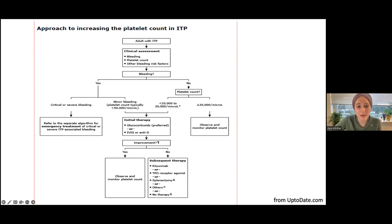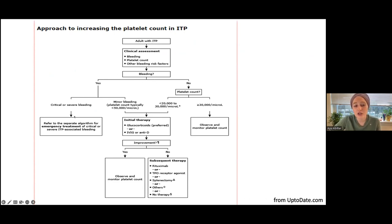This treatment pathway is taken from UpToDate. You do your clinical assessment — see if they're bleeding or not bleeding. If they're bleeding, you go through a whole different pathway treating it as an emergency. If they're not bleeding but just have a low platelet count and you think they have ITP, then you look at their platelet count.